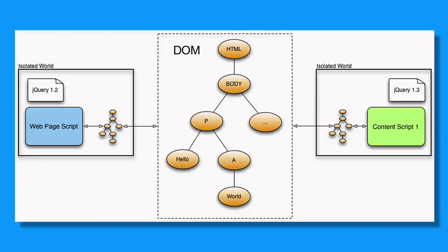In Google Chrome, we keep content scripts isolated from each other and from the pages they are running on with a system called isolated worlds. Each script that is accessing the DOM runs in its own isolated world, and each isolated world gets its own clean JavaScript environment, which ensures that libraries don't conflict with each other.